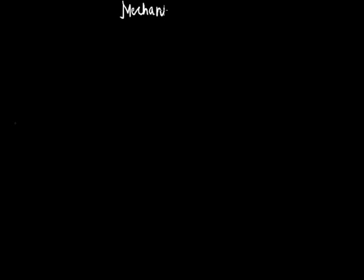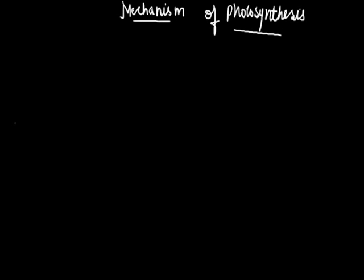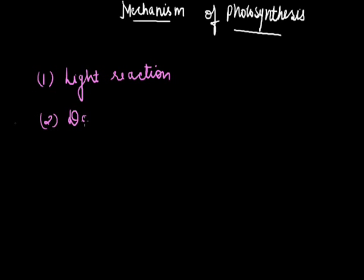The next part is: what are the various steps of photosynthesis, or in other words, the mechanism of photosynthesis? Photosynthesis is basically divided into two steps: the first step is called the light reaction and the second step is called the dark reaction.